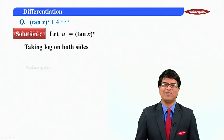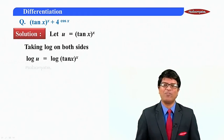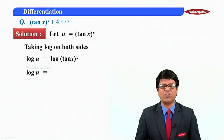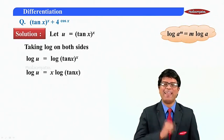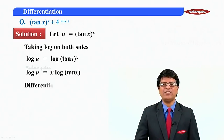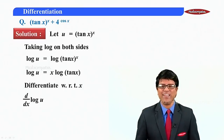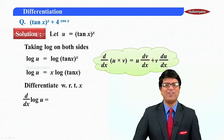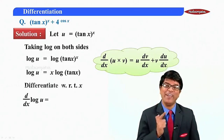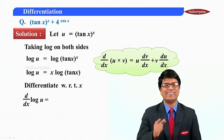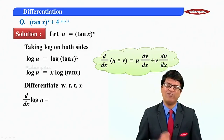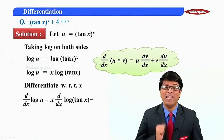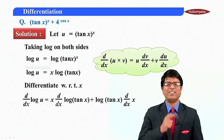Step one: take log on both sides. Log u is equal to log of tan x raised to x. Log u will be as it is; since the power becomes the coefficient, it will be x log of tan x. Differentiate with respect to x: d by dx of log u. There are two variables separated by multiplication, so we use the product rule — first times d by dx of second, plus second times d by dx of first. So: x times d by dx of log of tan x, plus log of tan x times d by dx of x.